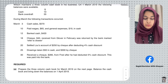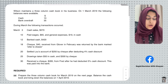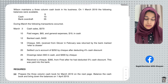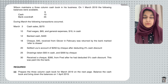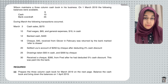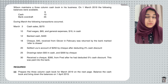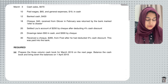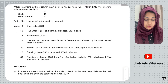They are saying here that Wilson maintains a three-column cashbook in his business. On 1st March 2019, the following balances were available: a cash balance of $10 and a bank overdraft of $35. Bank overdraft means it's a liability, and liabilities come on the credit side of the cashbook. The balance brought down for liabilities comes on the credit side.